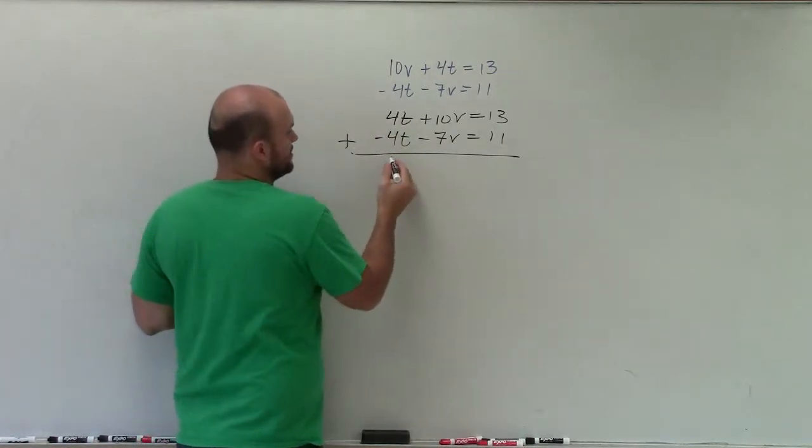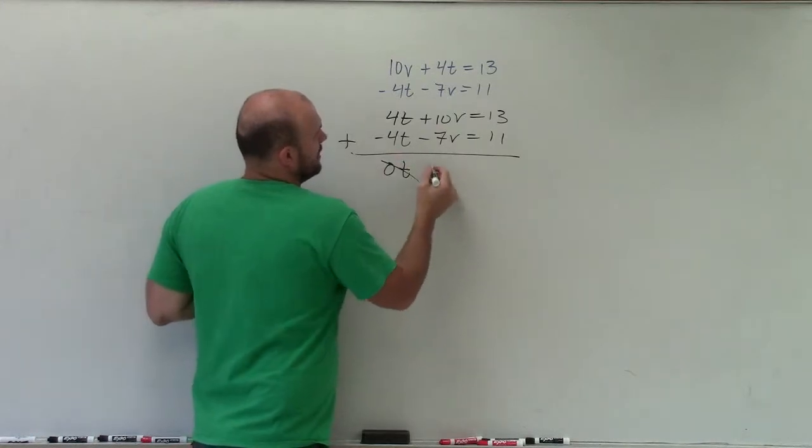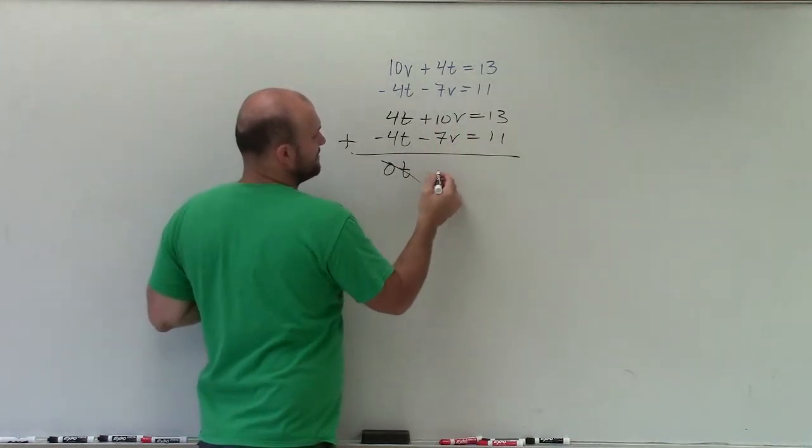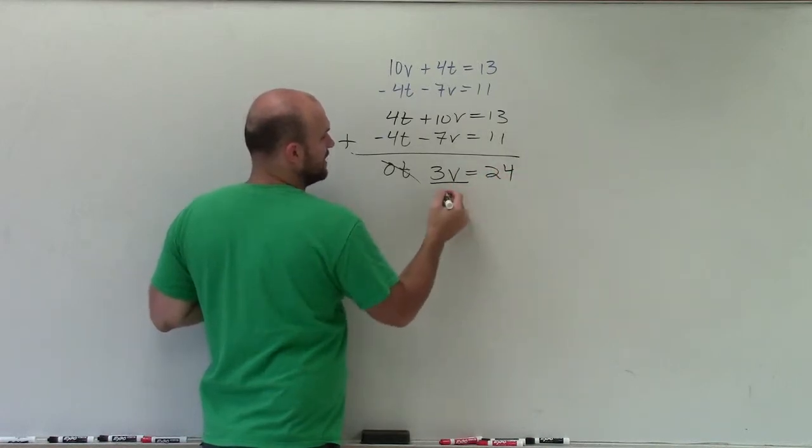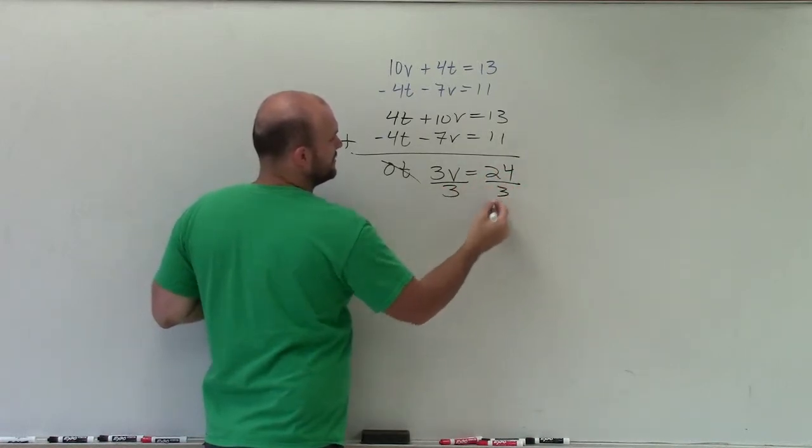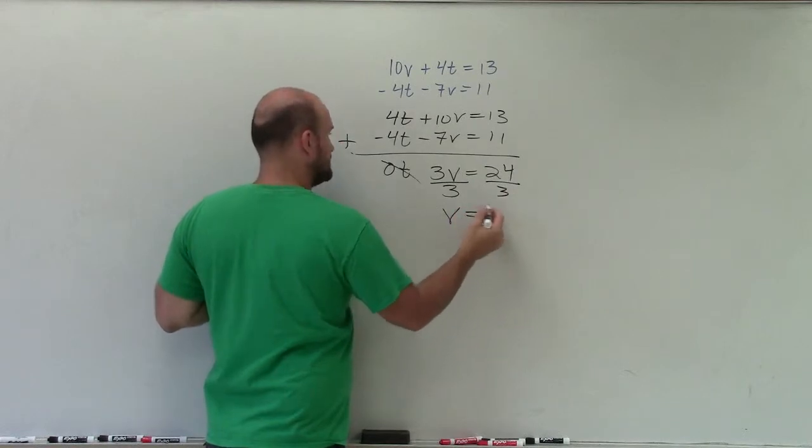And then 10t minus 7v is 3v equals 24. Now, to solve, I plug in, divide by 3, divide by 3, v equals 8.